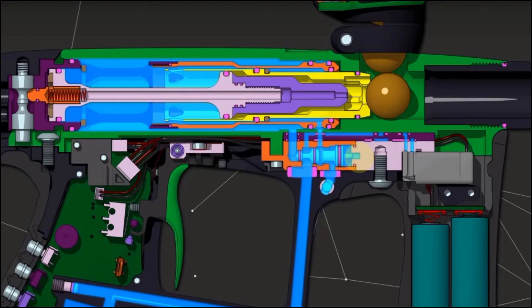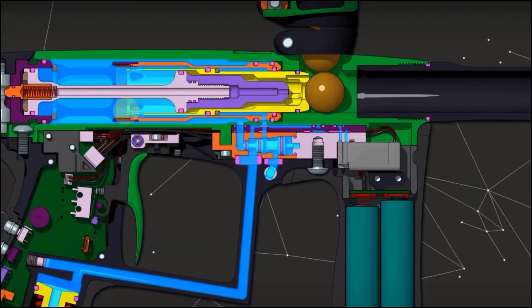At this point, the supply from the HPR is sealed from the air chamber, and the air sear has essentially let go. This air is now being vented through the SFR.